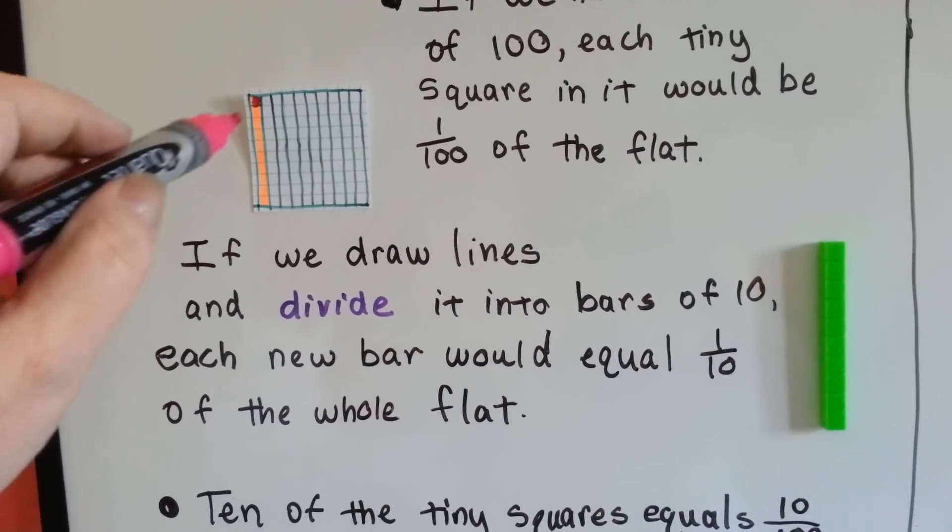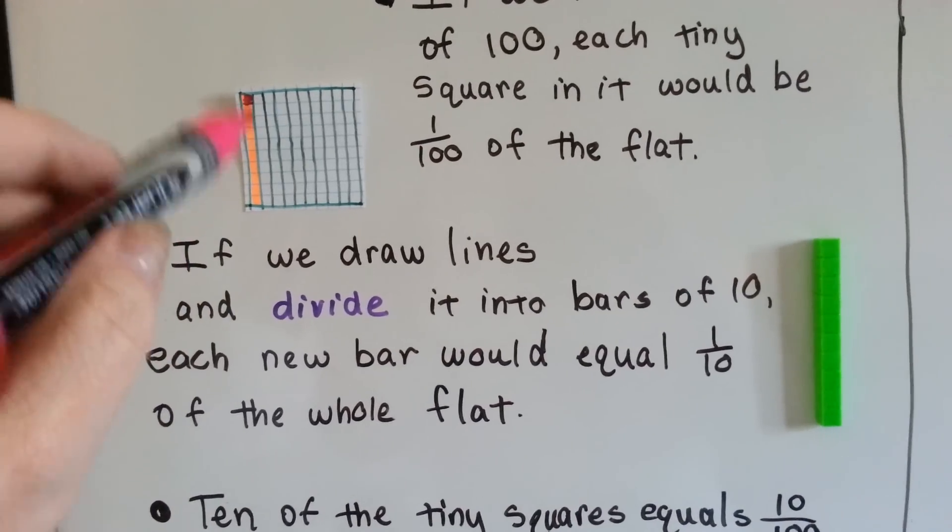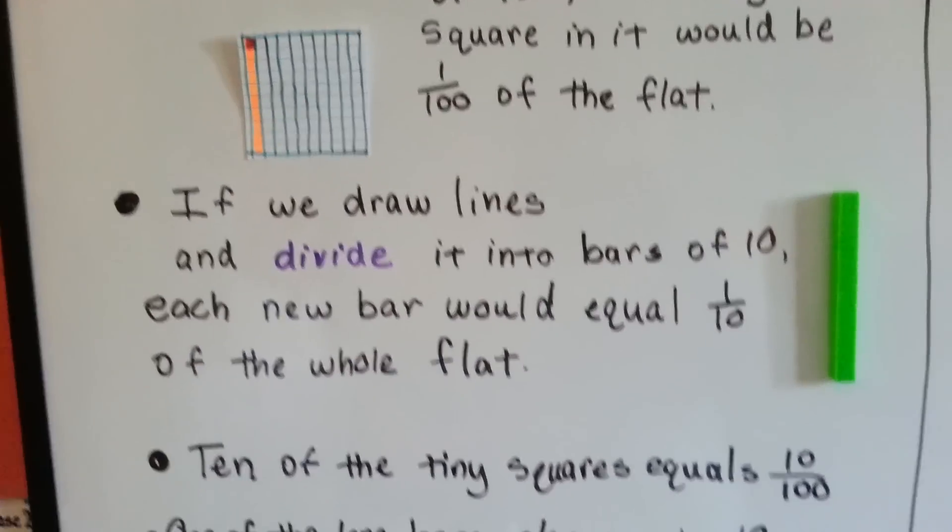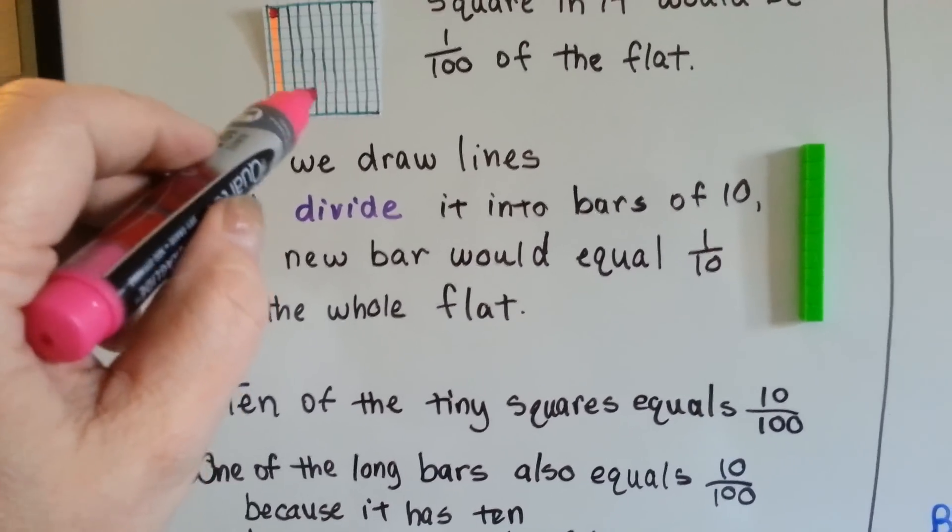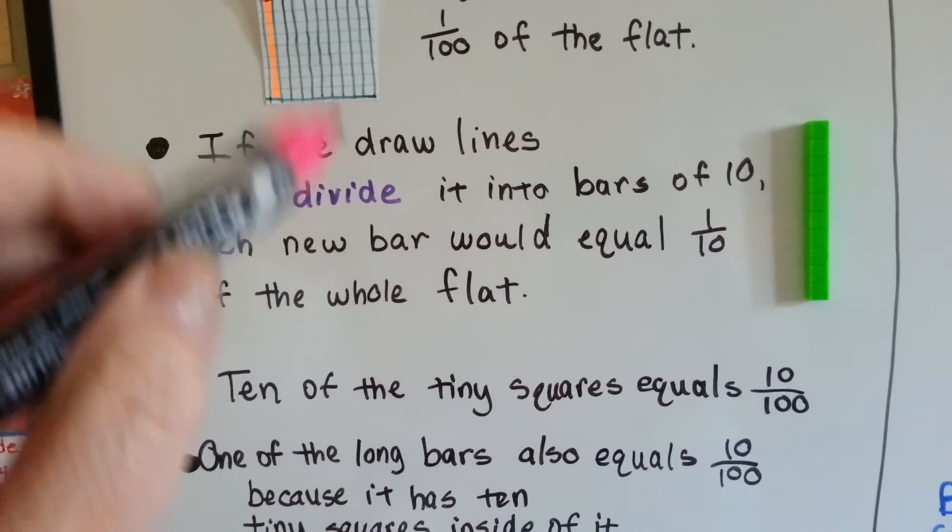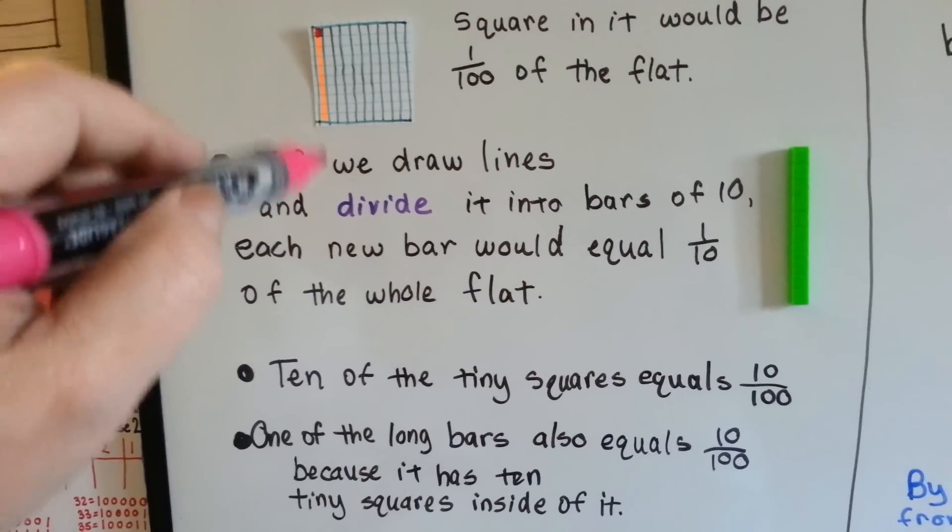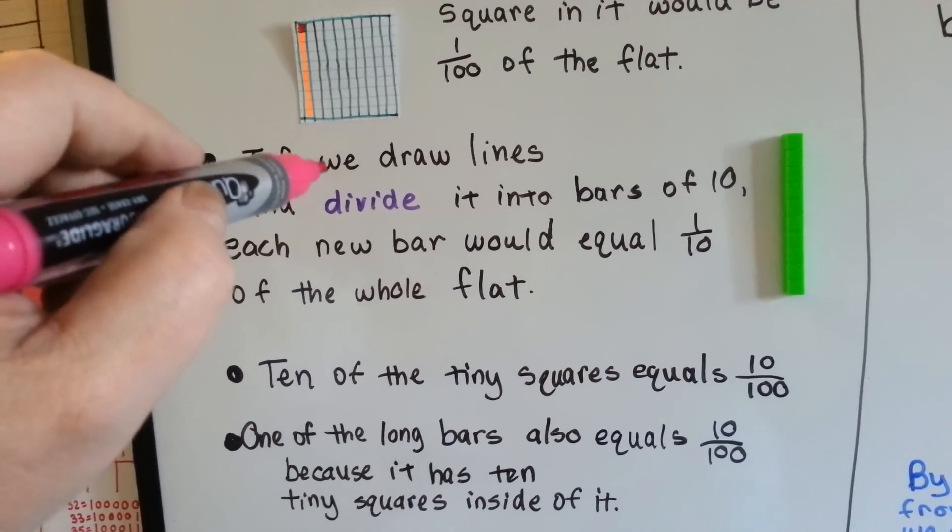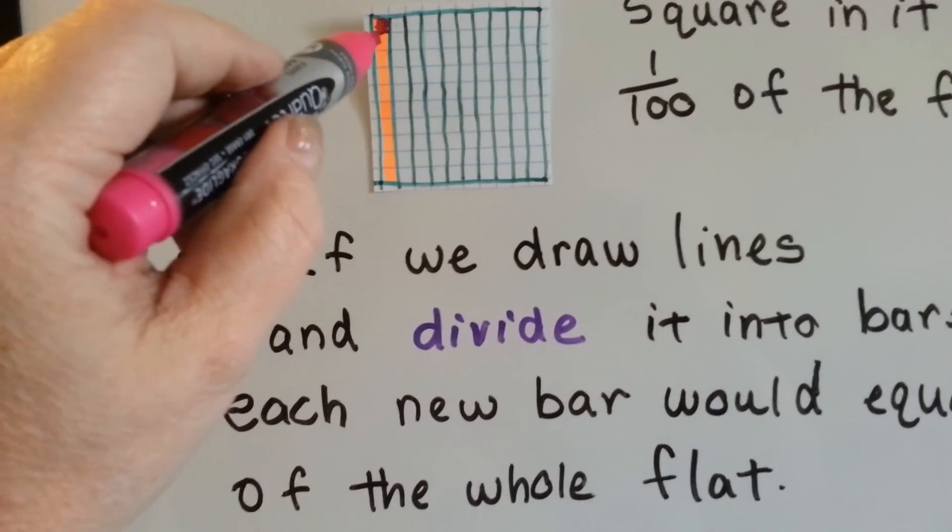Because it's split into ten bars, each new bar is equal to one tenth of the whole flat. Ten of the tiny squares that are in here are equal to ten out of a hundred, ten one hundredths. One of the long bars is also equal to ten one hundredths, because it's got ten tiny little squares in it still.